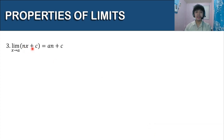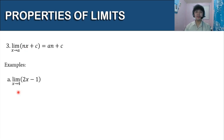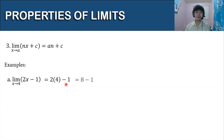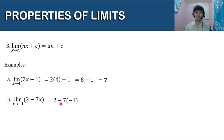Let's have the third property: the limit of the quantity nx plus c as x approaches a is equal to na plus c. So we're going to be substituting the value where x is approaching into our function. For example, the limit of 2x minus 1 as x approaches 4: substitute 4 to get 2 times 4 minus 1, which simplifies to 8 minus 1, and our answer is 7. For letter b, the limit of 2 minus 7x as x approaches negative 1: we have 2 minus 7 times negative 1, which simplifies to 2 plus 7, equal to 9.